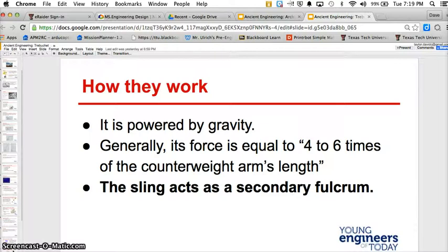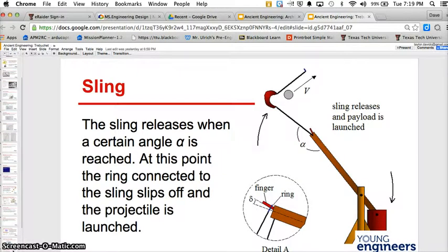In the last point, the sling acts as a secondary fulcrum. As you can see, the sling releases and payload is launched. This is the second fulcrum. At this point, the ring connected to the sling slips off and the projectile is launched.